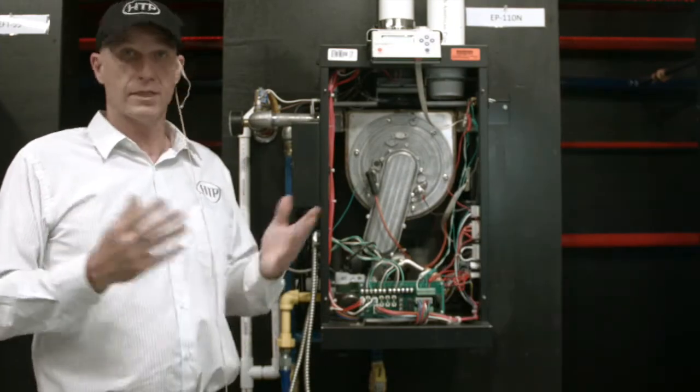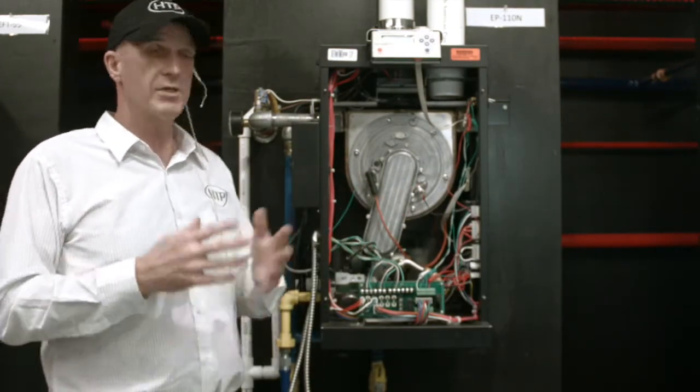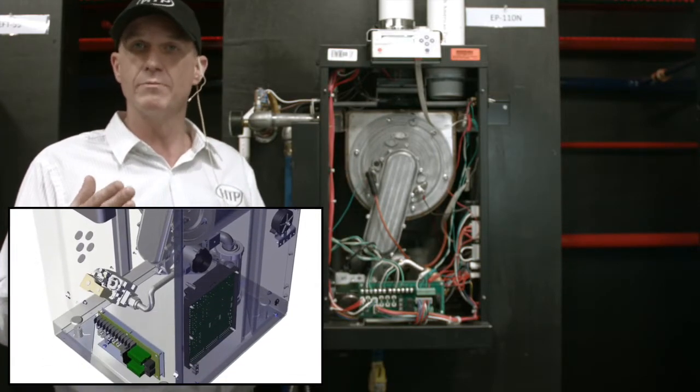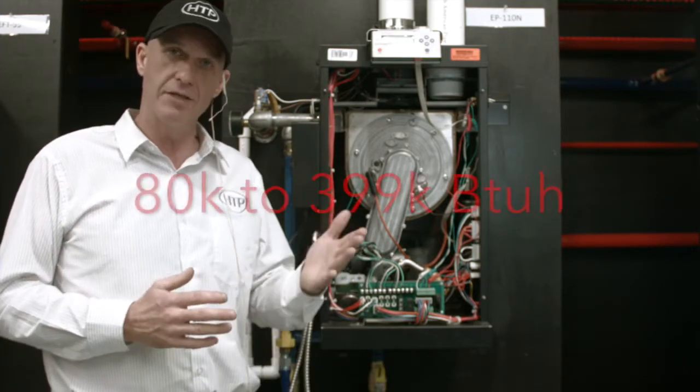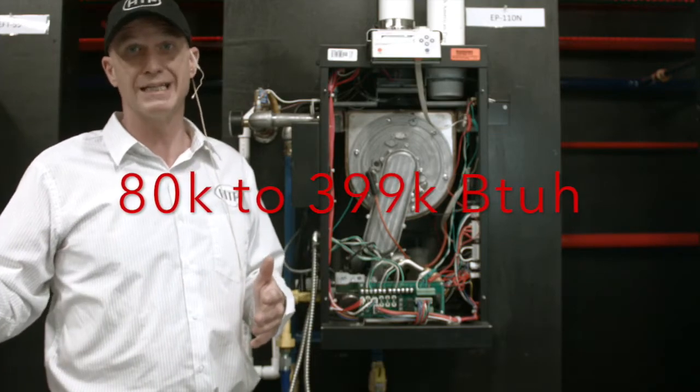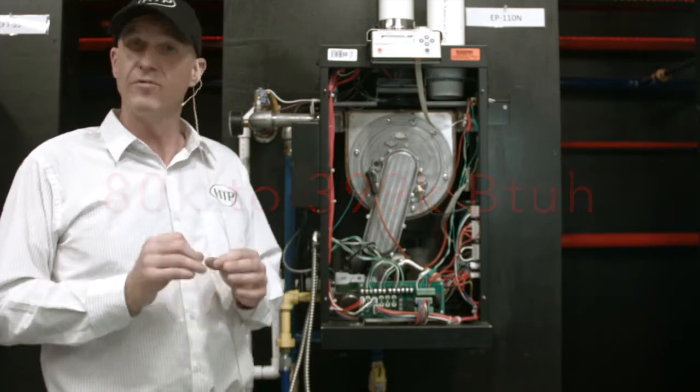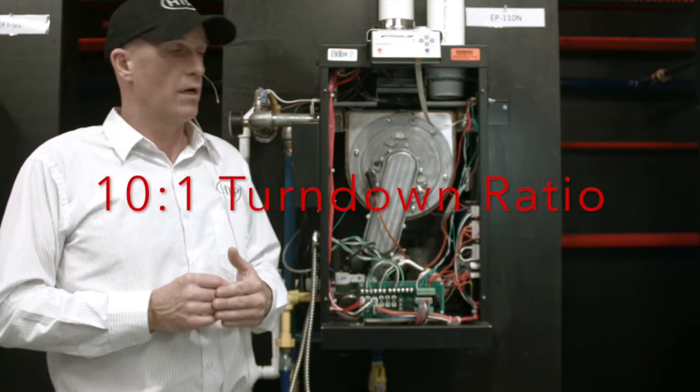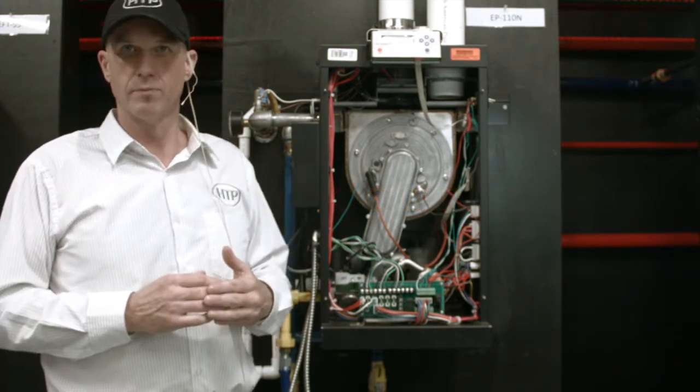Okay, I'd like to take a look at some of the feature benefits of the Elite Premier. As I mentioned earlier, it's either wall hung or floor mount. There are seven BTU input sizes available from 80,000 BTUs up to 399,000 BTUs. They are a full 10-to-1 turndown ratio and fully condensing, residential commercial boilers.